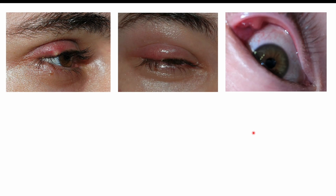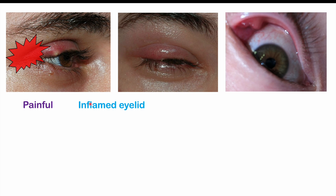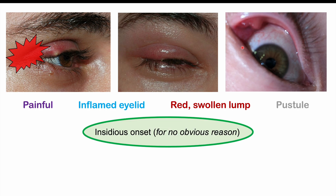The clinical features of a hordeolum include pain and inflammation of the eyelid, a red swollen lump, and a pustule — a small focal abscess with visible white pus. In the case of an internal hordiolum, you'll see a large red swollen lump on the inner eyelid. Patients will often note an insidious onset, meaning it slowly develops with no obvious injury or cause — it simply gradually appears with a lump and some eyelid swelling.